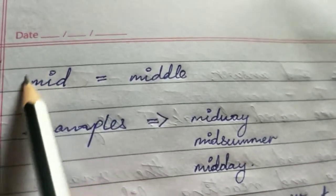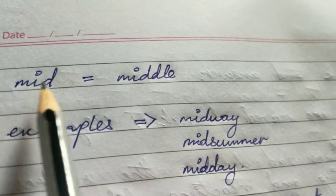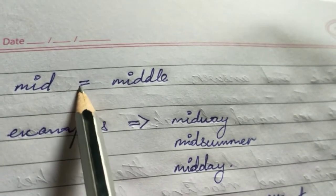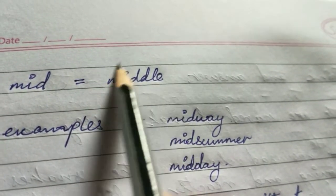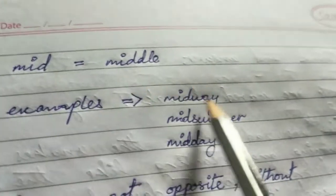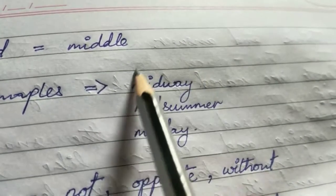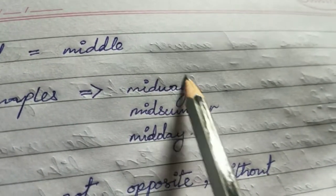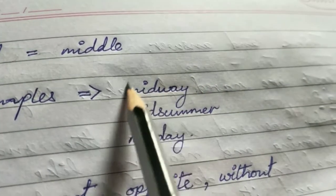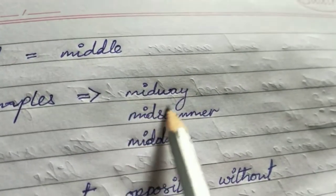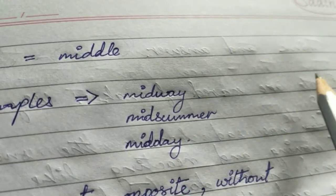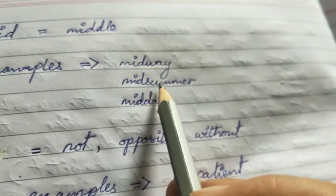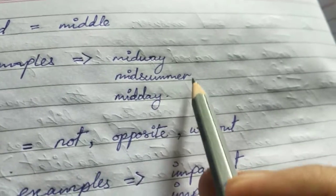The fifth prefix is 'mid', used in your book. It is used to indicate something is in the middle. For example, 'midway' — if you are going somewhere and you are at the middle of the journey, you say I am at the midway to reach a certain destination.